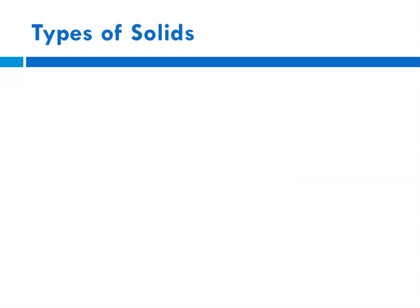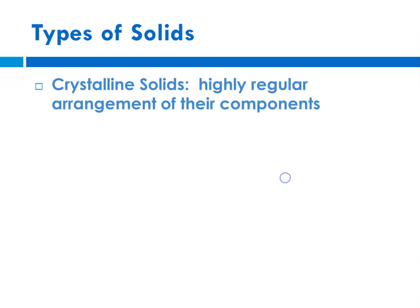We don't spend a lot of time with the definite shape, definite volume stuff. We talk about the types of solids, and there are generally two types of solids.